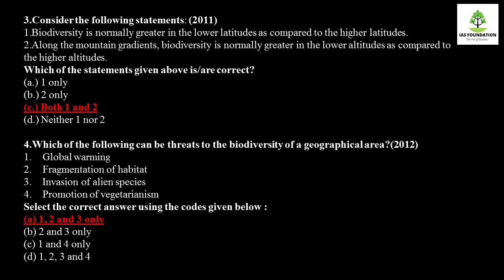The next question asks: which of the following can be threats to biodiversity of a geographical area? Global warming, fragmentation of habitat, and invasion of alien species are all threats. However, promotion of vegetarianism is not a threat — when non-vegetarians skip meat and animals are no longer hunted, biodiversity is preserved, not lost. So statements 1, 2, and 3 are correct.